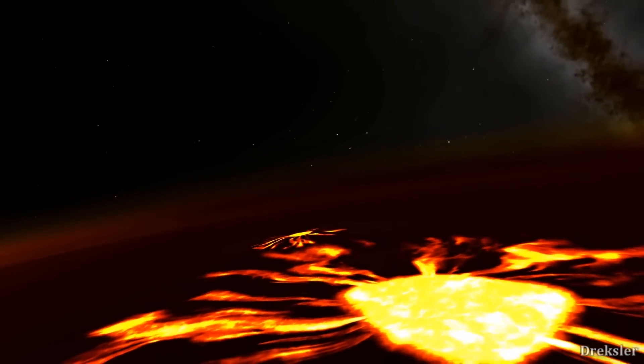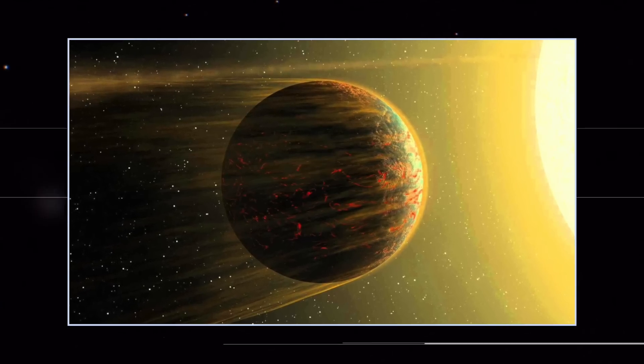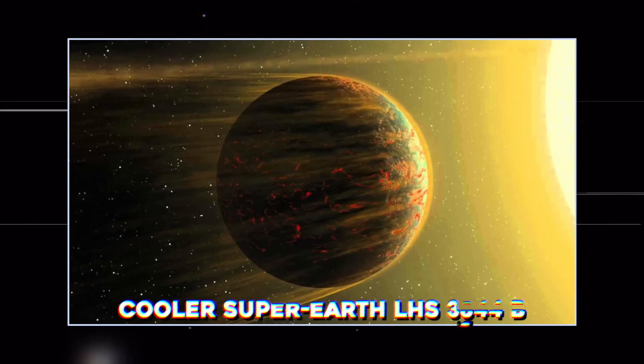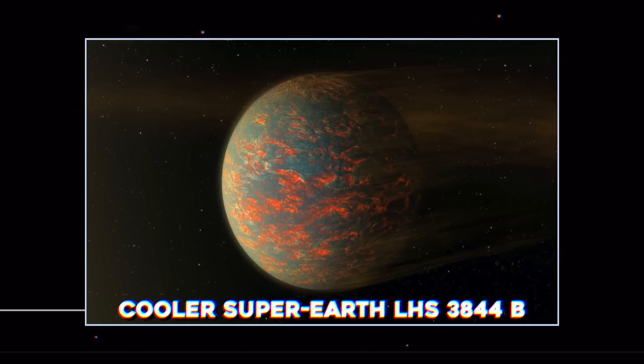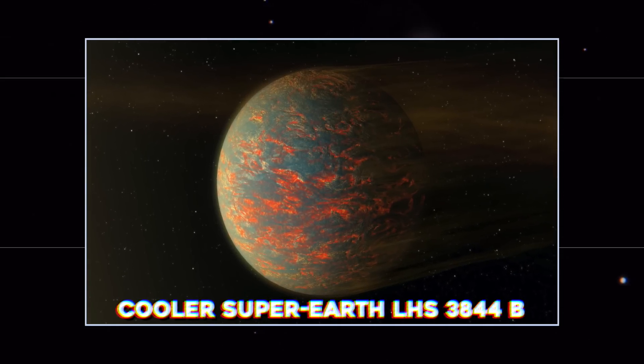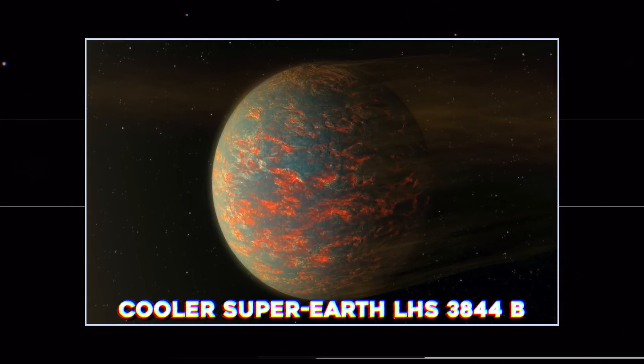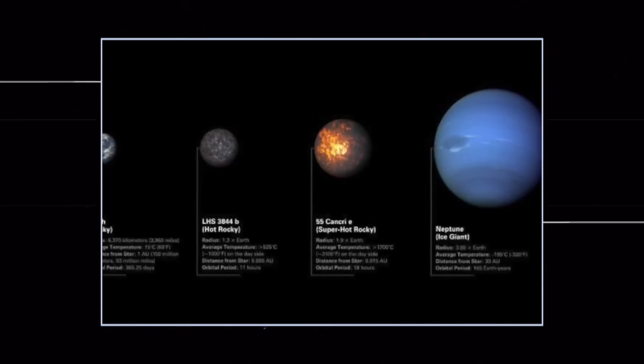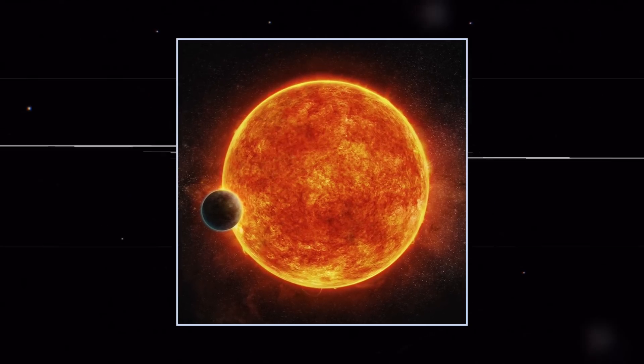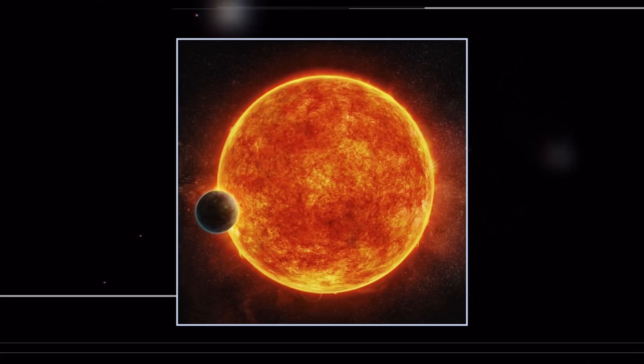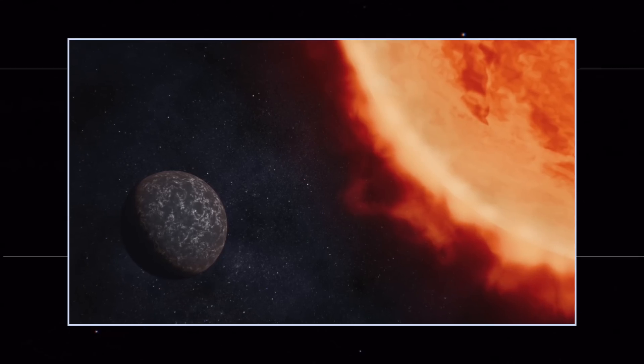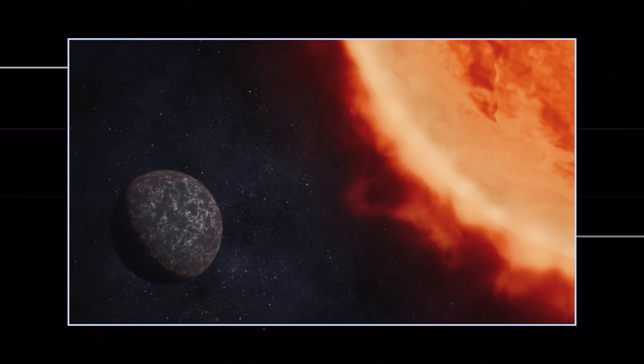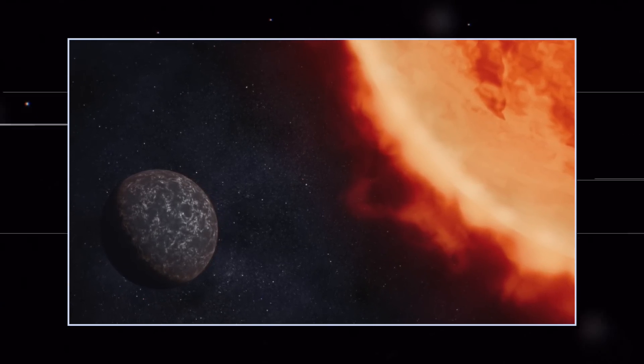Now let's take a look at the second exoplanet on the list, which is somewhat cooler super-Earth LHS 3844 b. So while 55 Cancri e will provide insight into the exotic geology of a world covered in lava, LHS 3844 b affords a unique opportunity to analyze the solid rock on an exoplanet surface.